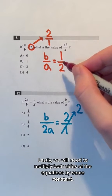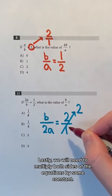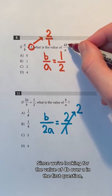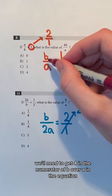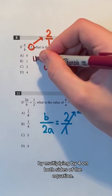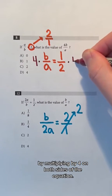Lastly, we will need to multiply both sides of the equations by some constant. Since we're looking for the value of 4B over A in the first question, we will need to get 4 in the numerator of B over A in the equation by multiplying by 4 on both sides of the equation.